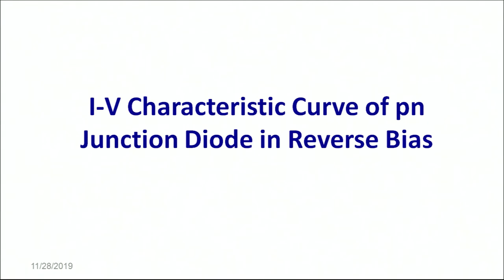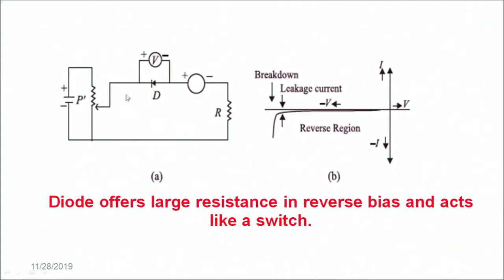Similarly, let's talk about the IV characteristic curves of a junction diode in reverse bias. In reverse bias the P side of the diode is connected to the negative terminal of the battery and the N side is connected to the positive terminal of the battery. This makes the diode connection in reverse bias. Because of this, the depletion layer increases and the diode offers a very large resistance in reverse bias and does not allow the current to flow.